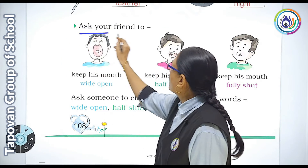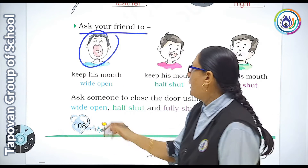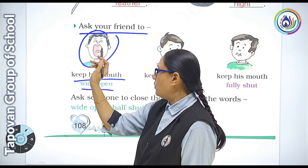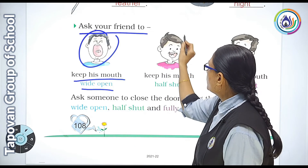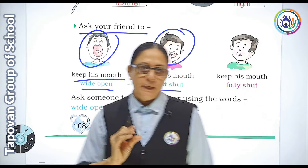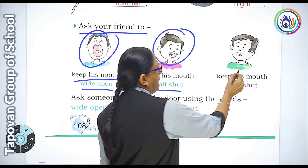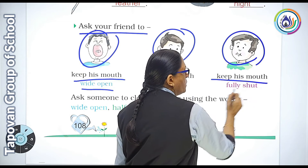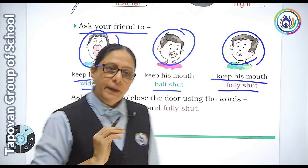Are your friends too? One child's mouth is fully open — keep his mouth wide open. Another child's mouth is half open — keep his mouth half shut. And the third child's mouth is fully closed — keep his mouth fully shut.